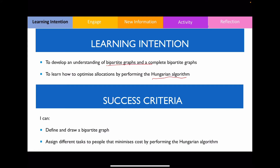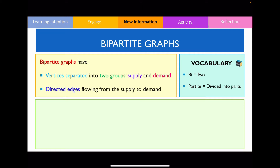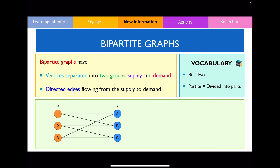Let's start off by defining these terms. Bipartite graphs are networks that have vertices separated into two groups — you can think of one group being the supply group and the other group being the demand group. You also have edges that flow from one dataset to the other dataset.